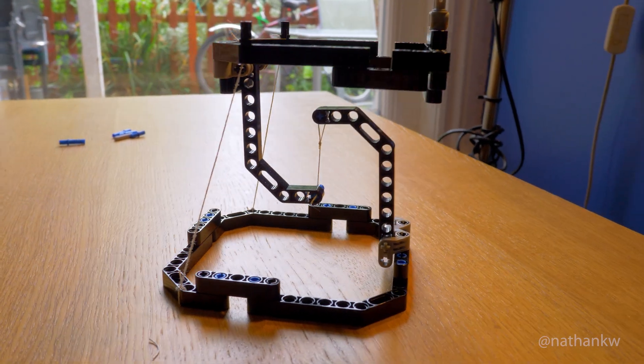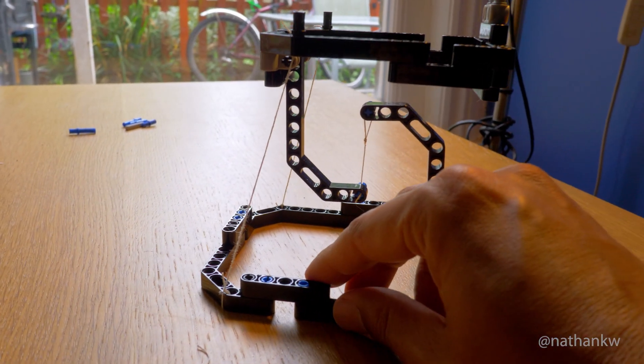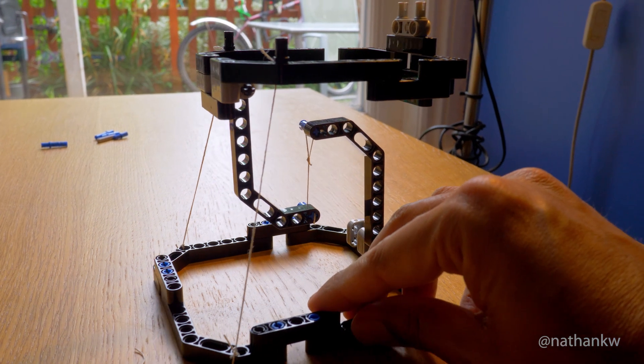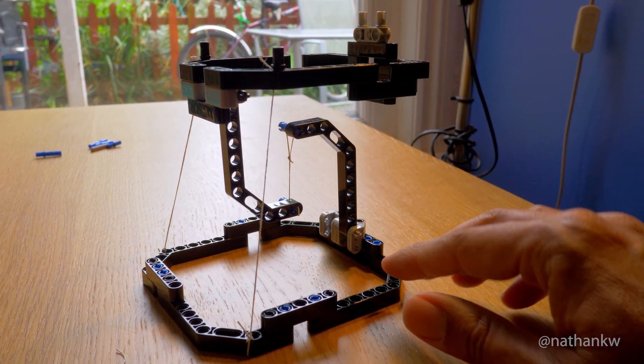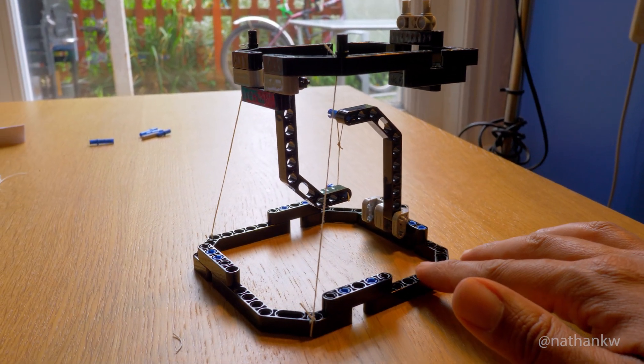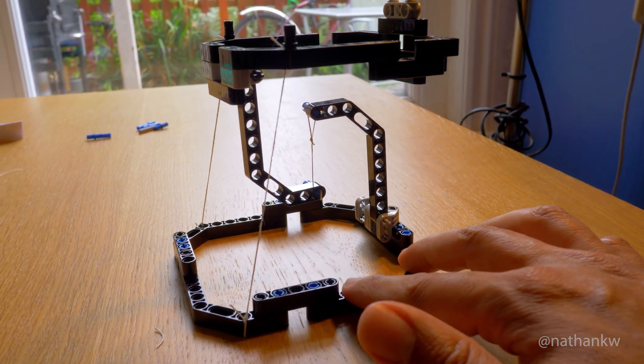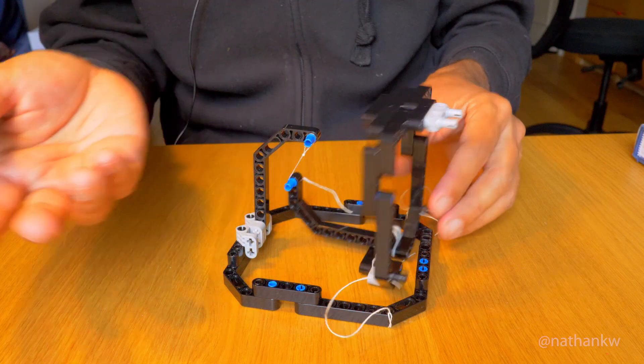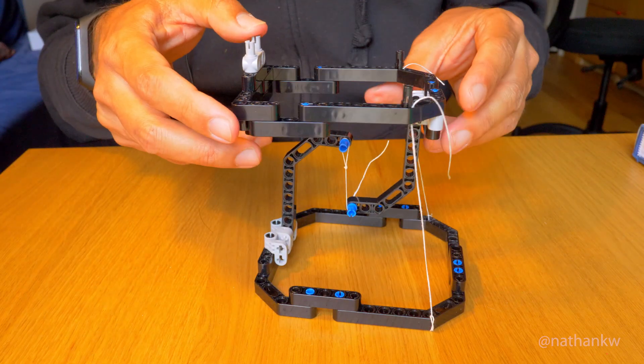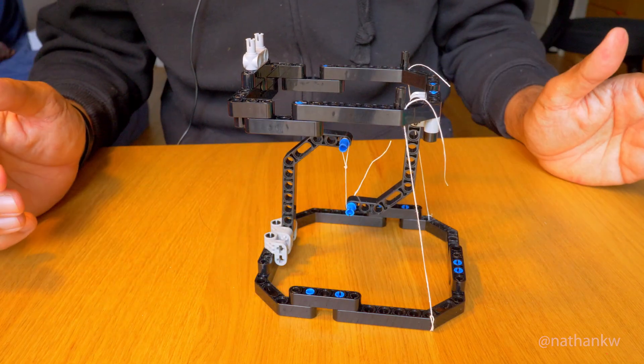You can see it's based on these strings. These are just normal strings. Of course, strings are only strong when they're pulled, and what's strange about it is it looks like it should just collapse, and yet it seems to float almost as if magnetic. You can take it apart like that. It's just normal strings, and when you put it like that, it's stable.